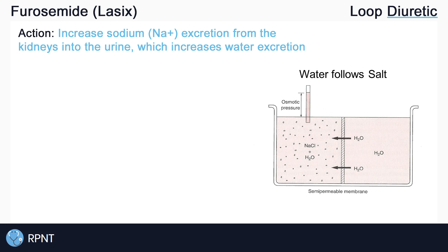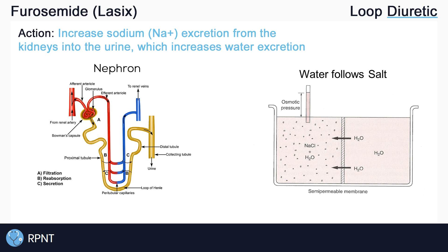The way our body gets rid of sodium and water is through the urine. More specifically, it is the nephrons of the kidney that are responsible for filtering the fluids in our body and creating that urine. The loop in loop diuretic means that furosemide is acting in a specific part of the nephron called the loop of Henle.